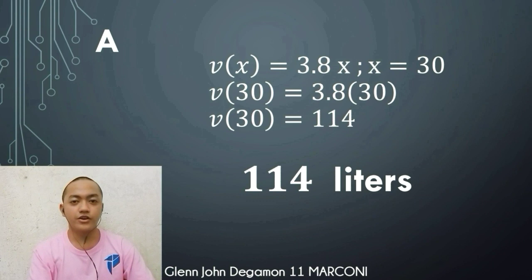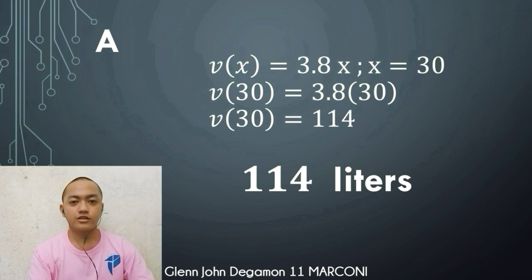For number six, we have the function v of x equals 3.8x, which converts x gallons of water into v of x liters of water. For letter a, we solve for 30 gallons: substitute x equals 30, so v of 30 equals 3.8 times 30 equals 114. Therefore, 30 gallons equals 114 liters of water.